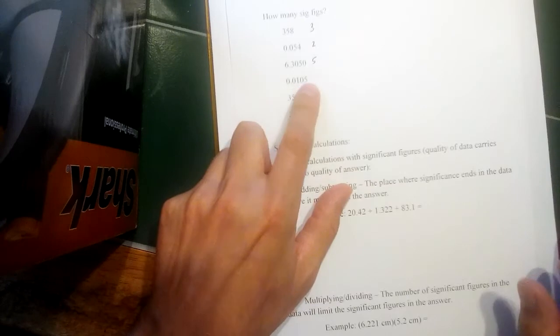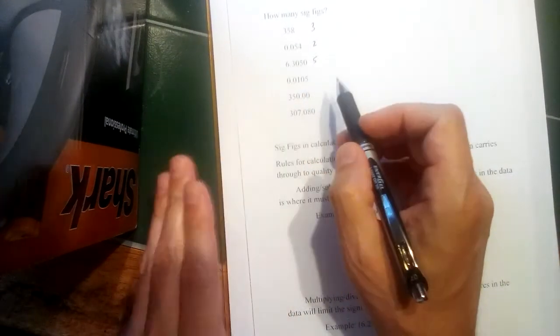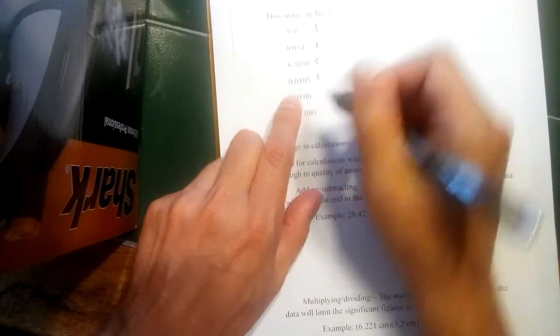0.0105, again, a trapped zero here, but these two zeros are to the left of the first non-zero digit. So this would be three. This zero counts, those zeros don't count.